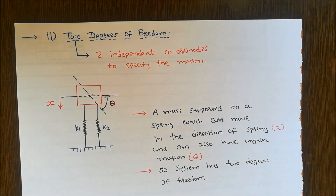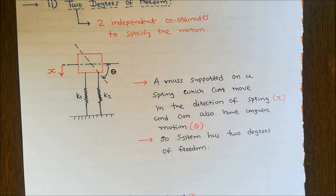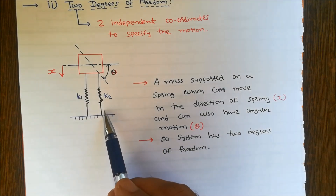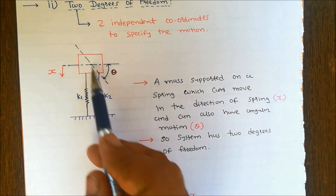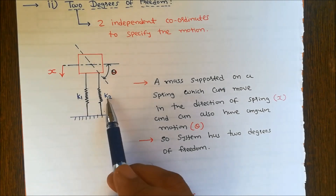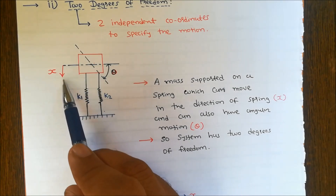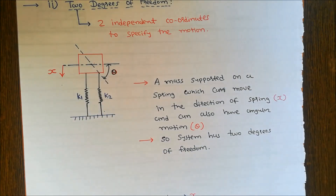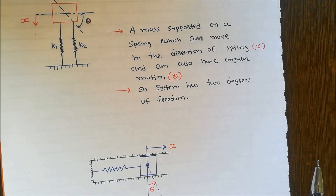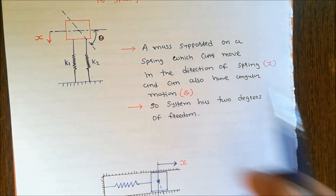Two degrees of freedom means two independent coordinates are required to specify the motion. Here we take one example of a mass supported on a spring which can move in the direction of the spring and can also have angular motion, because the spring stiffnesses are different. The mass can move in the x direction and also have angular motion theta, so the system has two degrees of freedom — the independent coordinates required are x and theta.